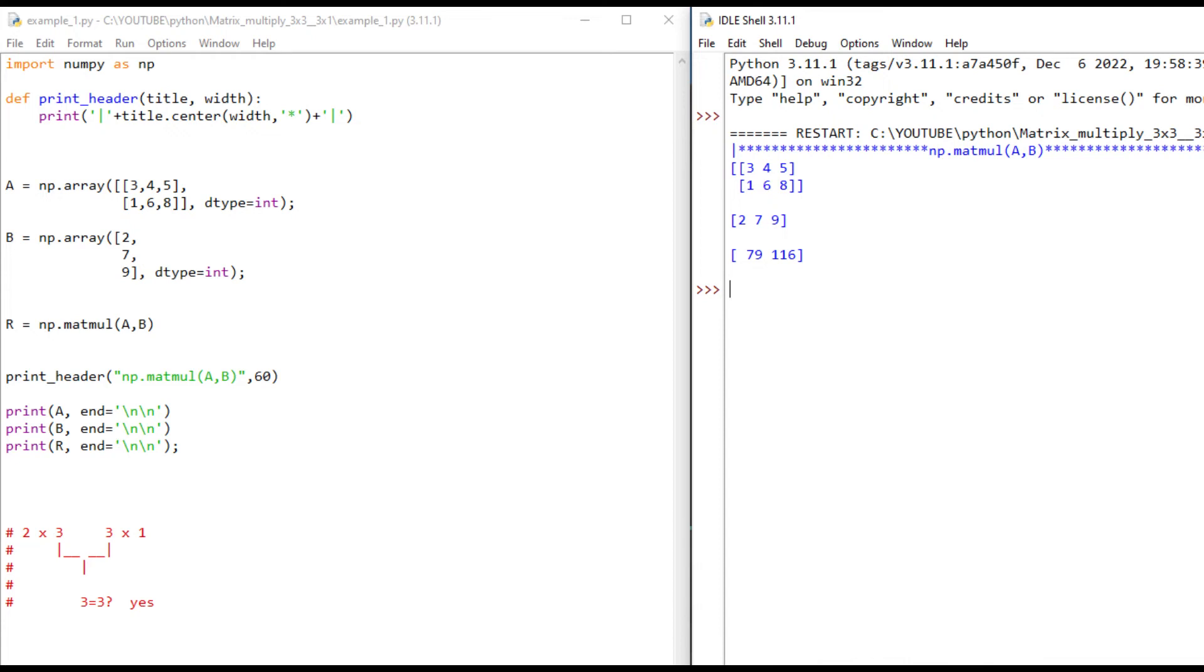Here you can see we're using NumPy. A, we're declaring as a 2 by 3, 2 rows, 3 columns, data type integer. B is 3 rows, 1 column, 3 by 1.